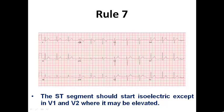We come to rule number seven and in rule number seven it checks the ST segment. And it mentions that it should start isoelectric except in V1 and V2 where it may be slightly elevated and this is considered normal. So ST segment should be isoelectric in all ECG leads except V1 or V2 in which it may be elevated.